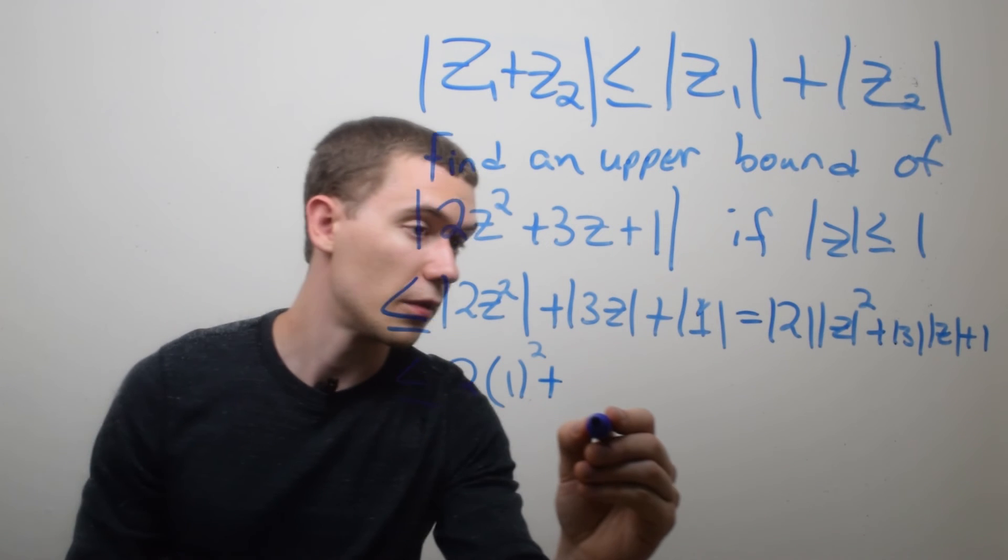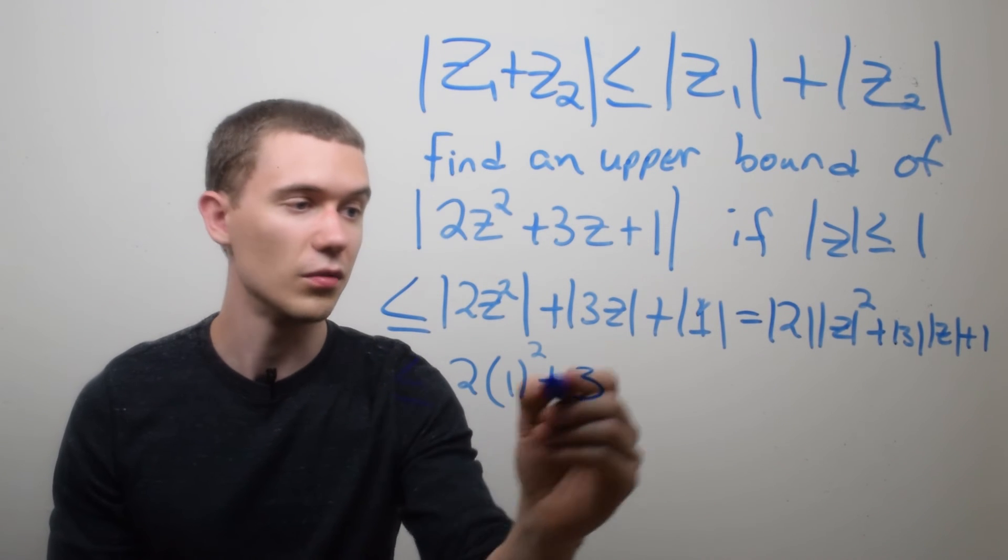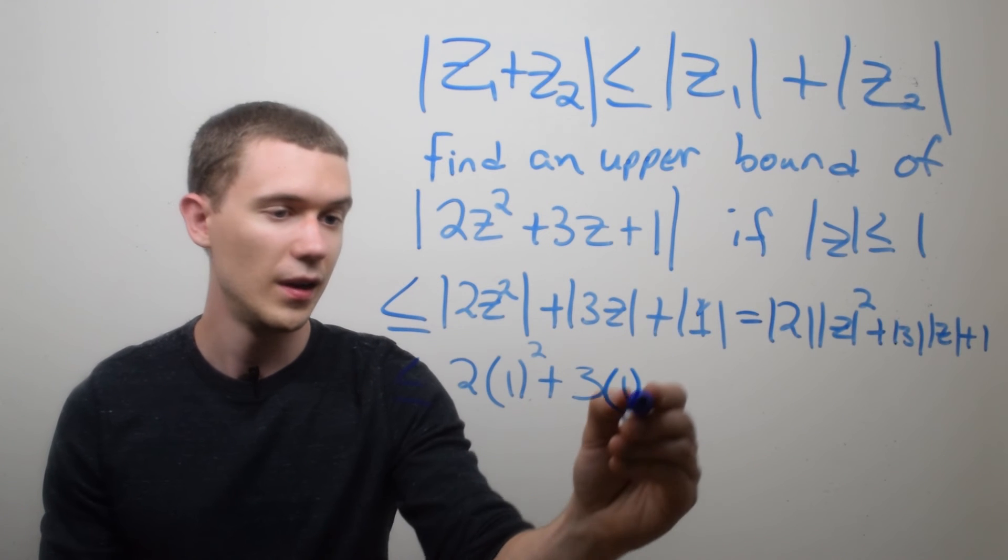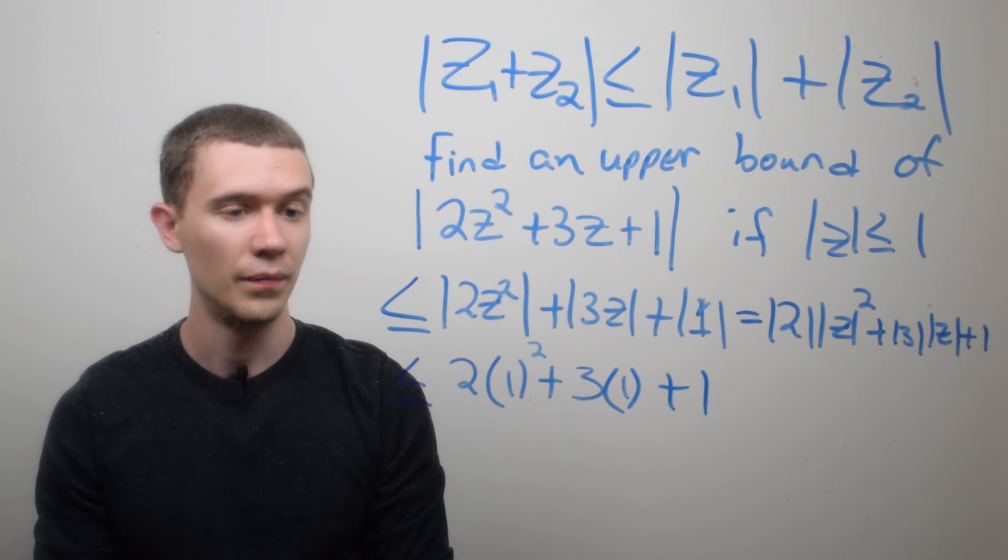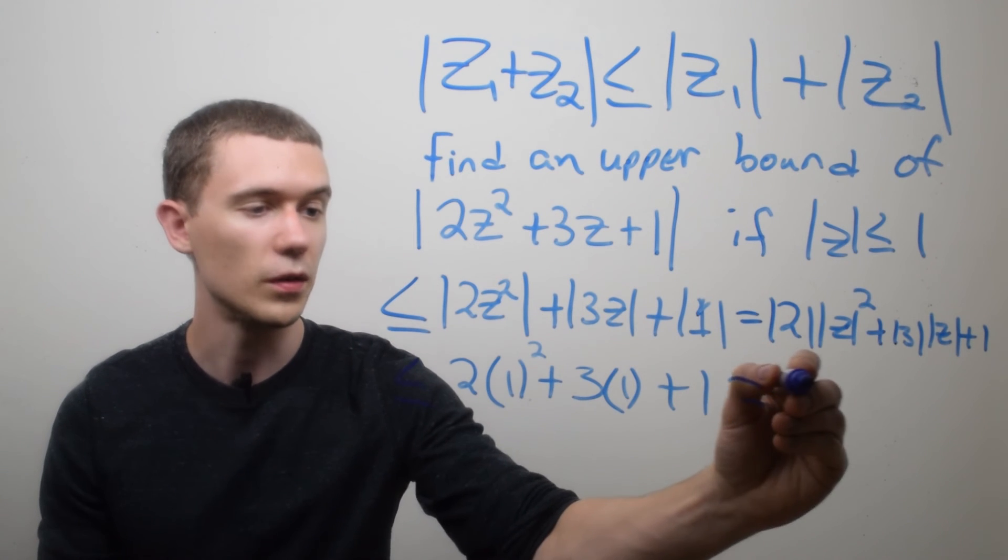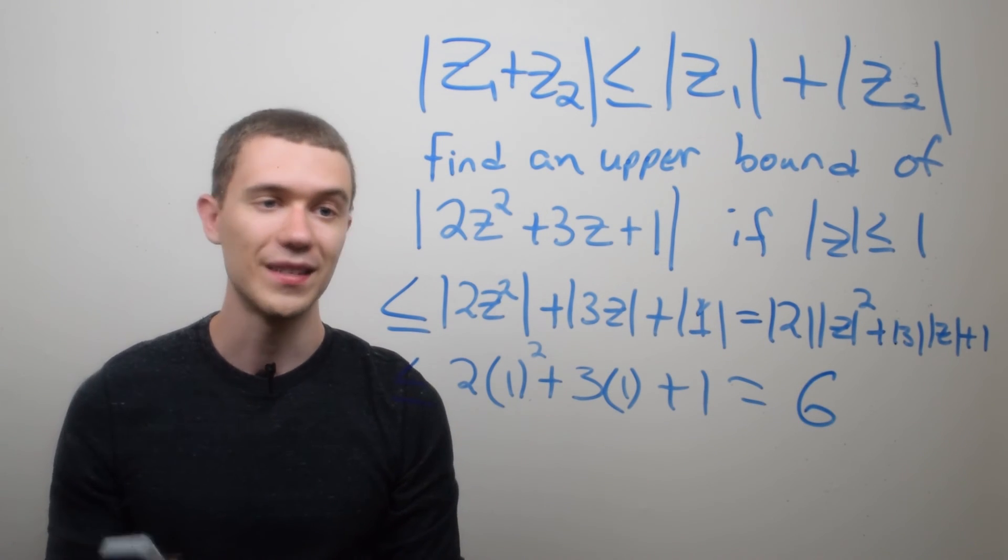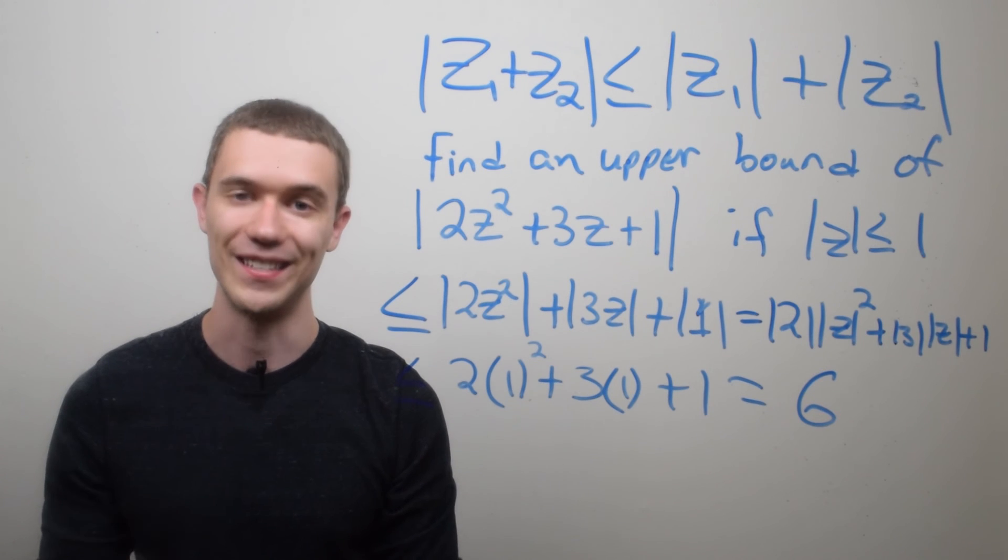I have plus 3, the modulus of 3 is 3. I have the modulus of z, which is upper bounded by 1, and then I have plus 1. And so here we're just getting 2 times 1 is 2, plus 3 times 1 is 3 plus 1. 2 plus 3 plus 1 is 6, and so an upper bound for this complex modulus is 6.